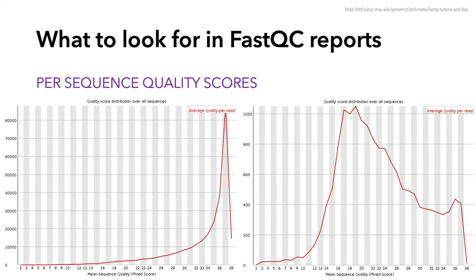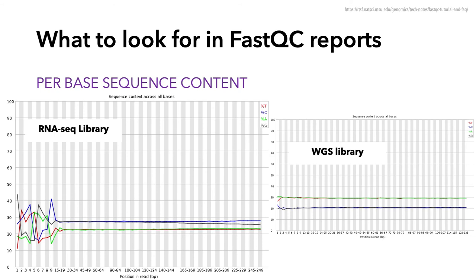The next module is per sequence quality scores. These generate plots showing the number of reads versus the average quality score over the length of the read. Ideally you'll have a heavily left-skewed plot like on the left here. Lower quality samples will have more broadly distributed Phred scores. This is one of my favorite plots for doing a sanity check after quality filtering or trimming, because you can see the distribution change after removing those low quality reads.